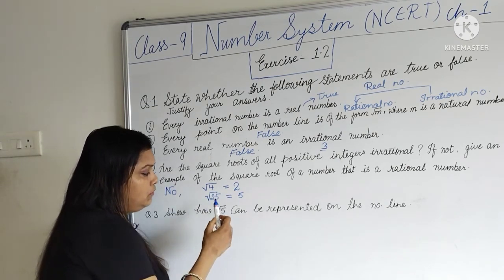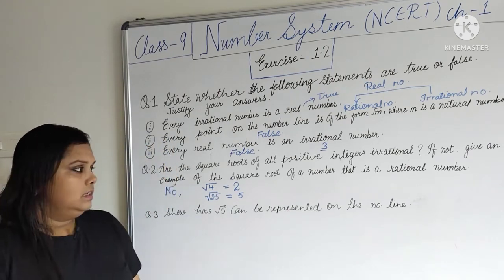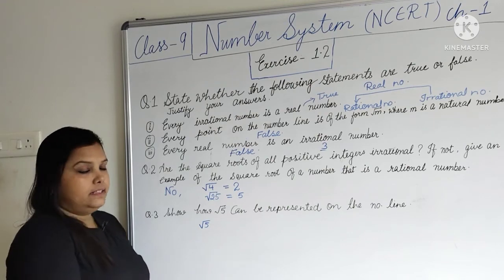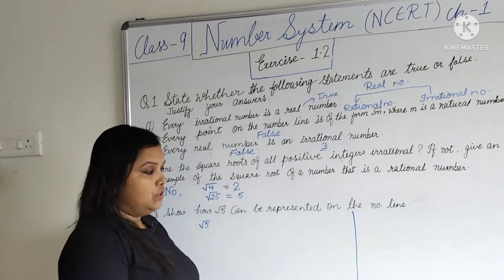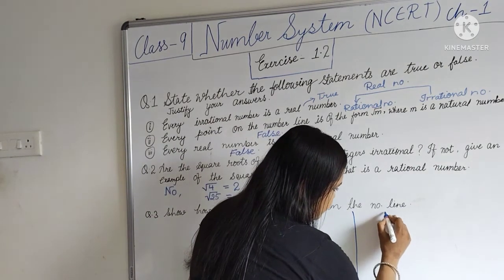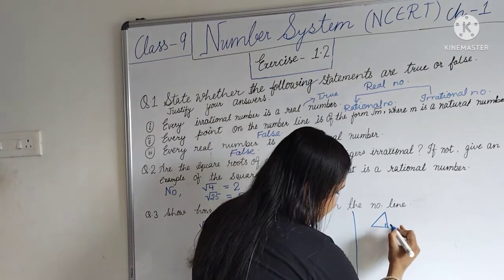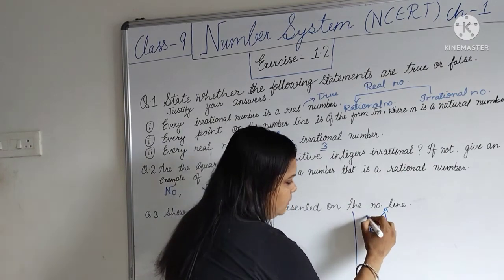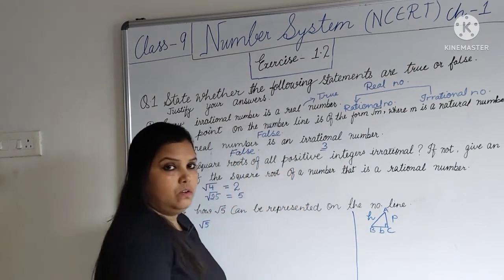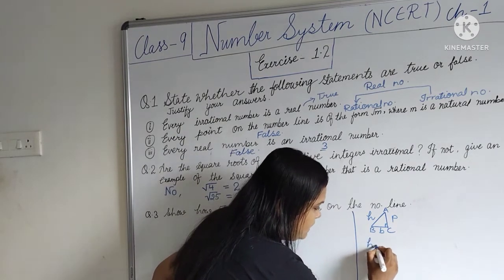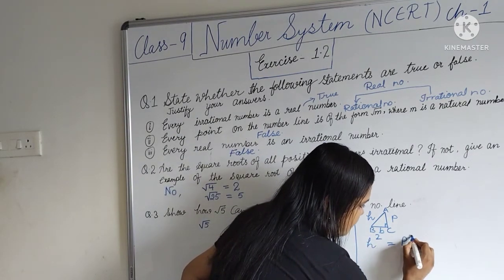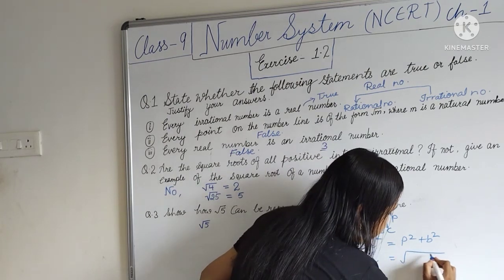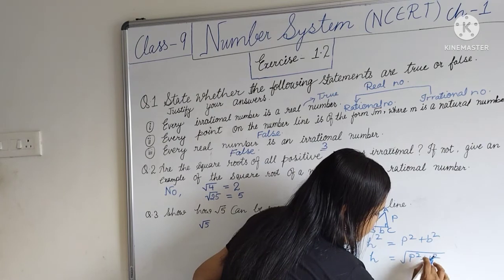Now moving to the next question: show how √5 can be represented on the number line. Before doing this, let us recall the Pythagoras theorem. Taking a right-angle triangle ABC, the longest side is the hypotenuse, and we have the perpendicular and base. By Pythagoras theorem: h² = p² + b², or h = √(p² + b²).